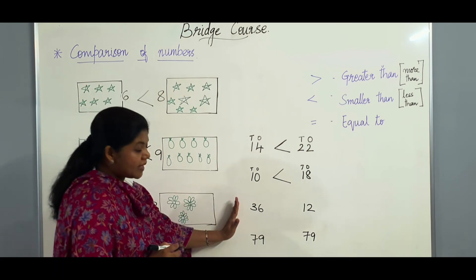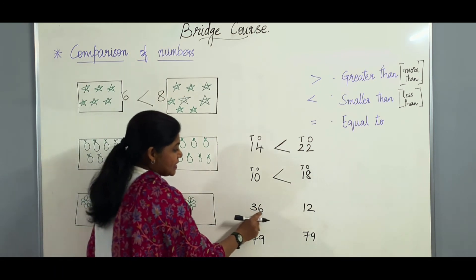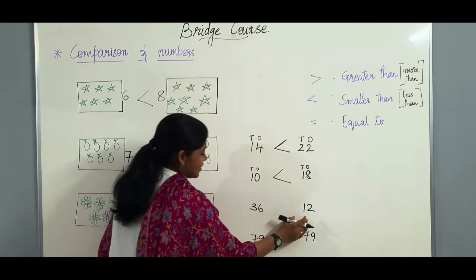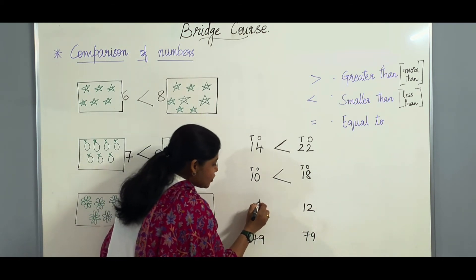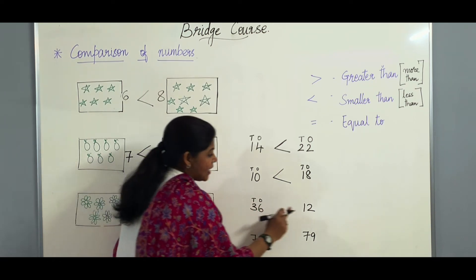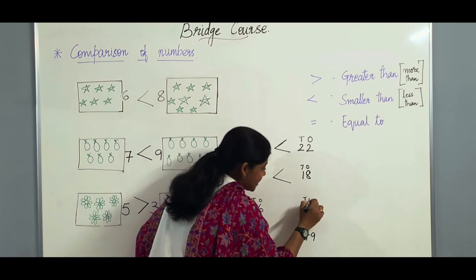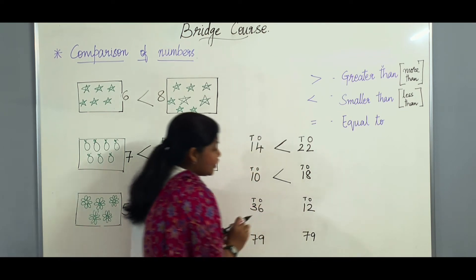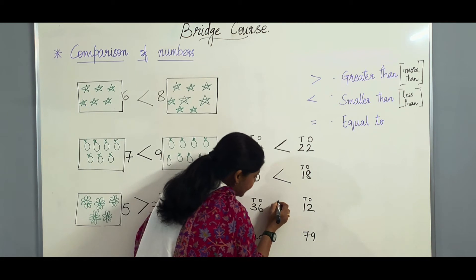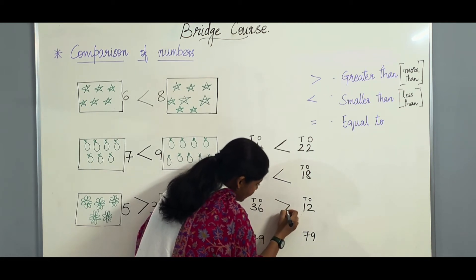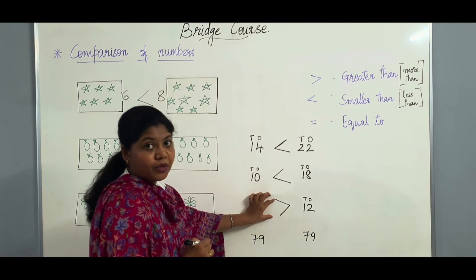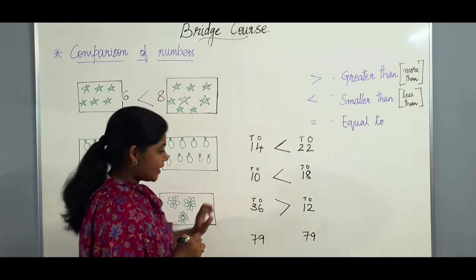Let us go to the next example: 36 and 12. In 36 the number on the tens is 30, and the number in the tens of 12 is 10. So 30 is greater than 10, therefore 36 is greater than 12. The crocodile will be eating the number 36, so the mouth has to be open to the greater side of the number.